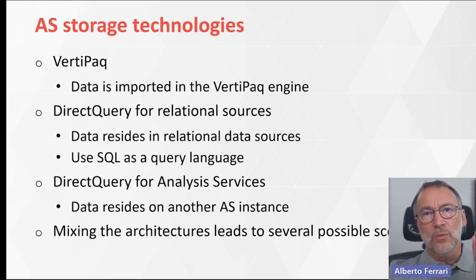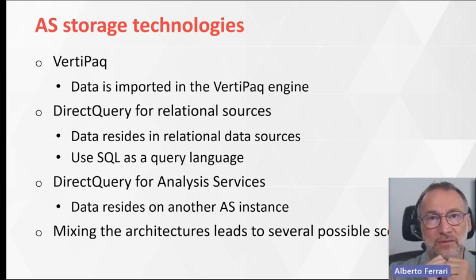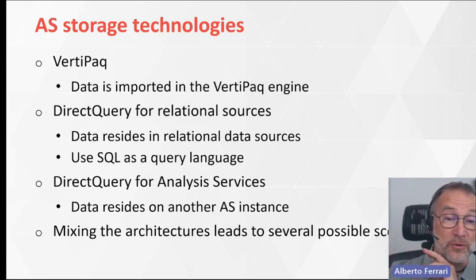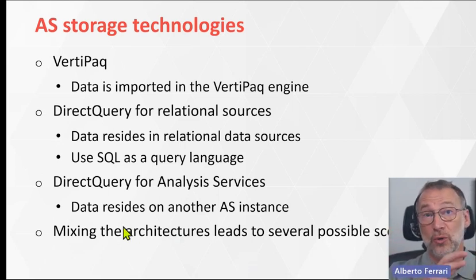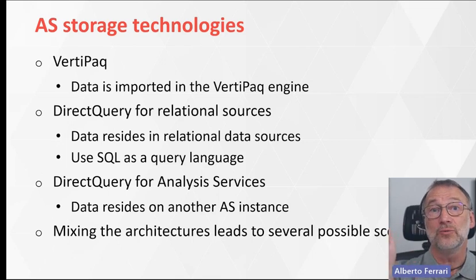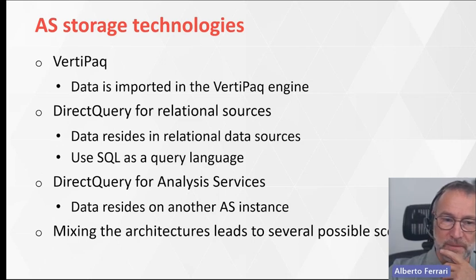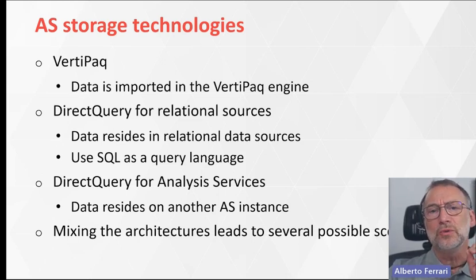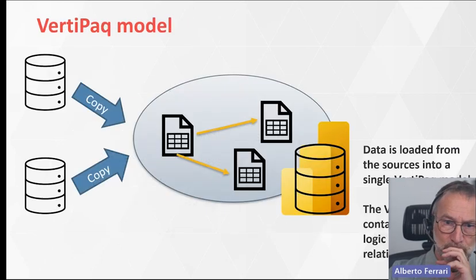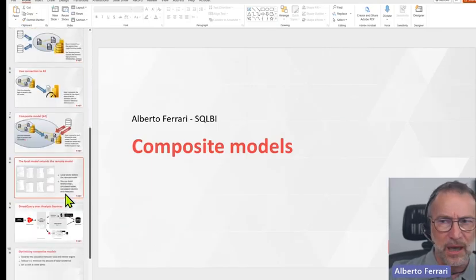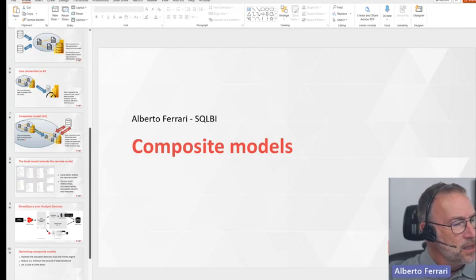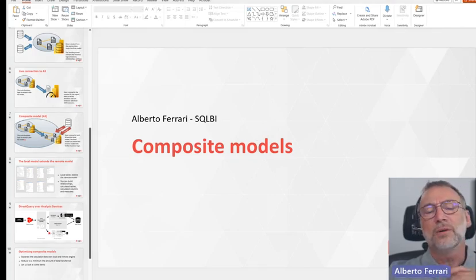With a composite model, you connect to an Analysis Services database — a model that can have DirectQuery, VertiPack, or any other engine — and you link to it. The data is not in your local model; the data is still in the remote model. Mixing the architecture makes everything a bit more intricate. In order to use a composite model, you start with a live connection. I prefer to show everything with a demo, so let's start with a new Power BI Desktop file that contains basically nothing.